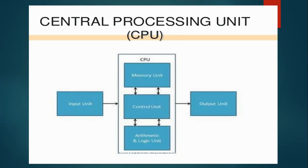Next is the Control Unit. The CU controls all the operations of all different parts of the computer. It regulates the step-by-step operations of all parts of the computer. Its main job is to carry out or execute instructions — just like our brain controls our organs and body parts, the control unit controls all the functions of our computer.